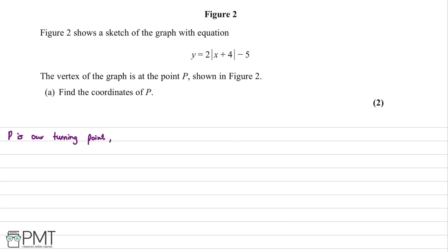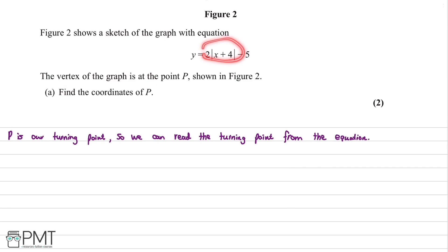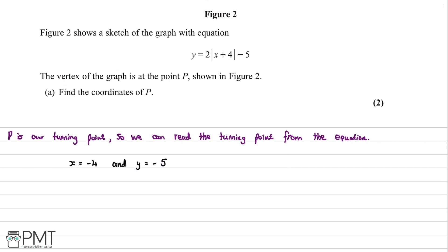We can read the turning point directly from the equation. To do this, we swap the sign of the term next to x, giving x = -4, and the remaining term gives the y-coordinate, so y = -5. Therefore the coordinates of P are (-4, -5).